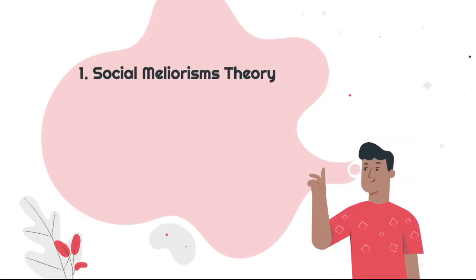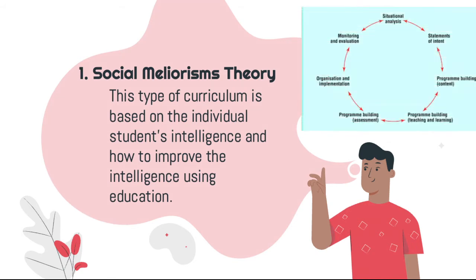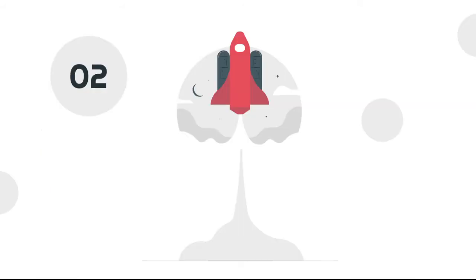1. Social Meliorism Theory. This type of curriculum is based on the individual student's intelligence and how to improve the intelligence using education. Situational analysis will have statements of intent, for program building of content, teaching and learning, which will result in assessment, implementation, and evaluation that correspond to situational analysis.